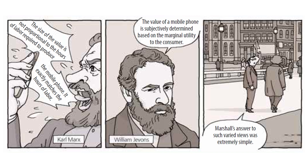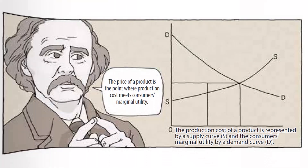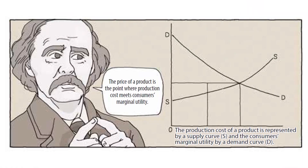Marshall's answer to such varied views was extremely simple: the price of a product is the point where production cost meets consumers' marginal utility.